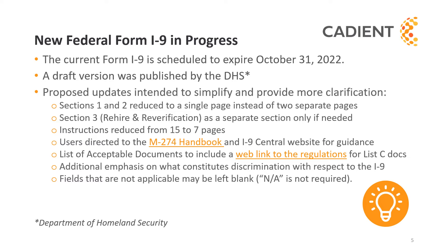With respect to the Federal Employment Authorization Form, the Form I-9, the current version is scheduled to expire at the end of October in 2022. A draft version was published by the Department of Homeland Security, and the proposed updates are intended to both simplify and provide more clarity. For example, Sections 1 and 2 will be reduced to a single page rather than two separate pages.